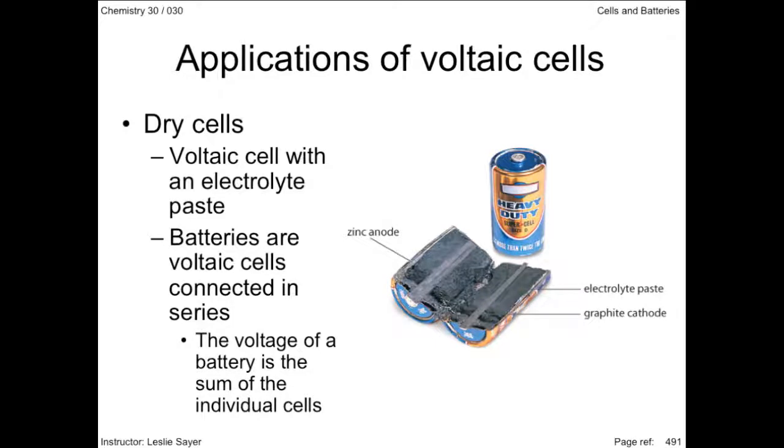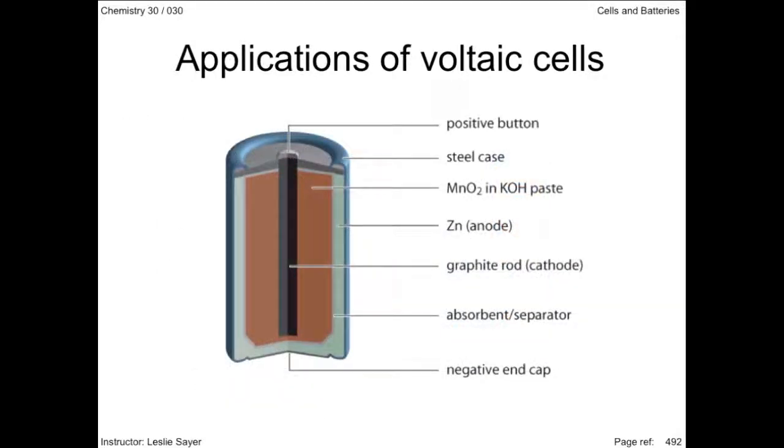In the dry cell shown here, oxidation occurs at the zinc electrode and reduction at the graphite electrode. Since graphite is the conductive but non-reactive component of the dry cell, the oxidizing agent is obviously in the electrolyte paste. An alkaline dry cell as shown in your text shows the electrolyte is a very alkaline or basic paste. Manganese oxide and water combine to form a strong oxidizing agent while the zinc metal in a hydroxide paste forms a strong reducing agent.